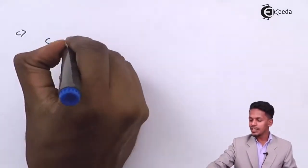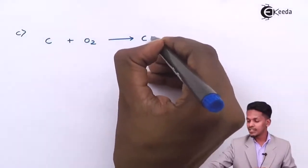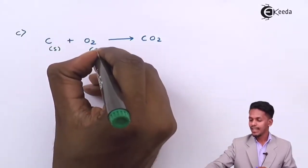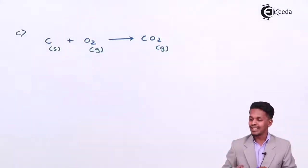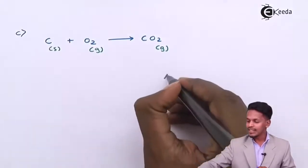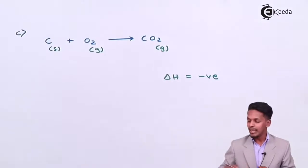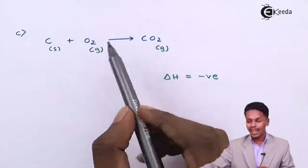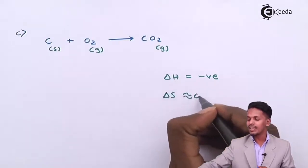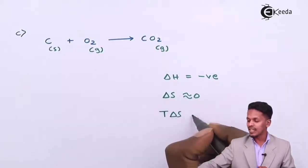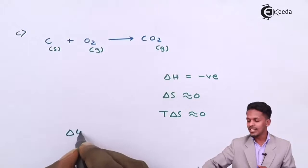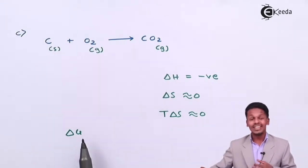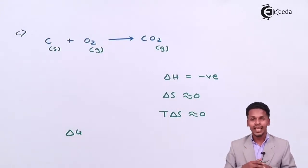The third condition: when carbon is treated with oxygen to form carbon dioxide — C (solid) + O₂ (gas) → CO₂ (gas). This is also a combustion reaction, so delta H has a negative value. However, the number of moles of gaseous product and the number of moles of gaseous reactant are the same, so delta S is approximately zero. Therefore T·delta S is approximately zero, and the delta G value will not change significantly with change in temperature.